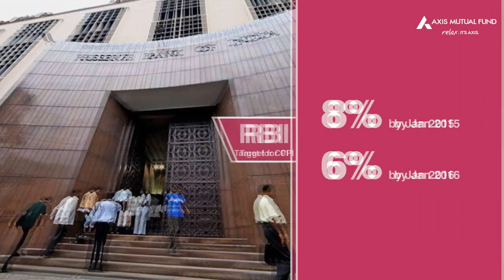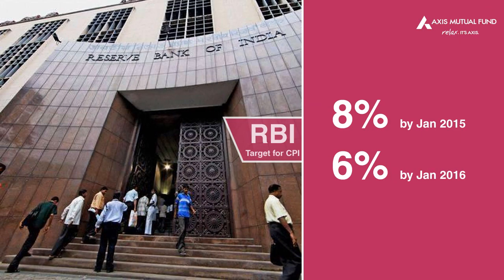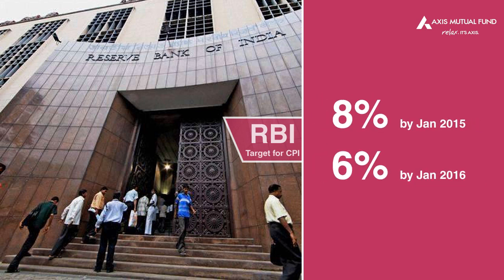With food inflation and Co-Inflation expected to head lower in the near term, we do expect the Reserve Bank to increasingly be more accommodative in monetary policy. That is to say, over the next year or two, we should expect the RBI to start reducing interest rates. The RBI has set itself a target to bring CPI inflation down to 8% by January 2015 and to 6% by January 2016.